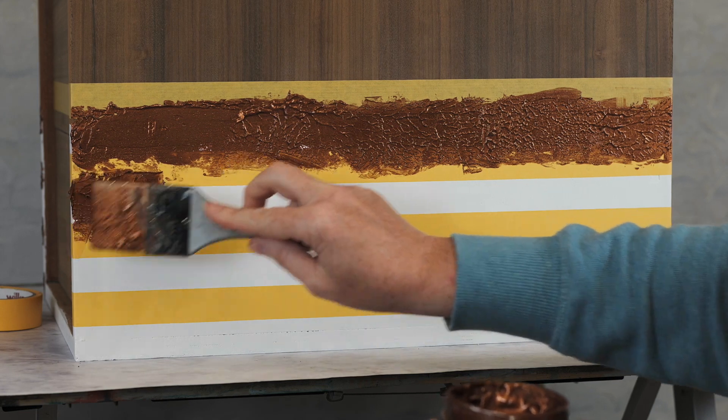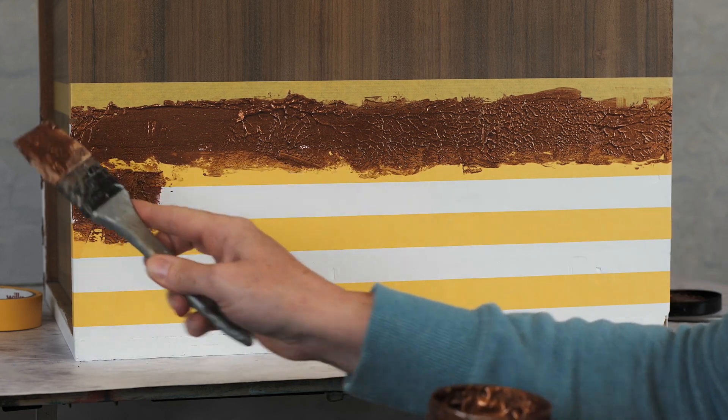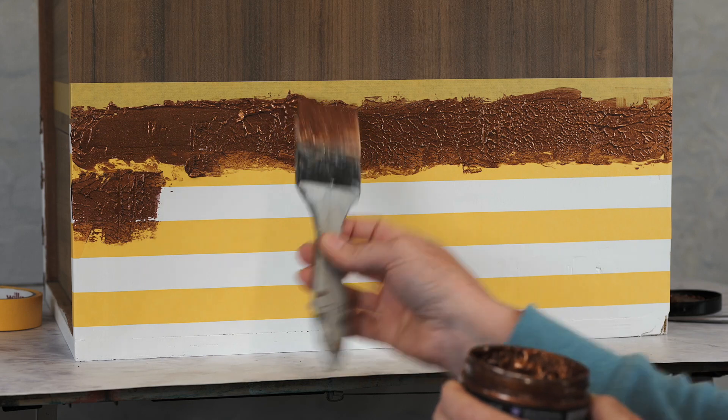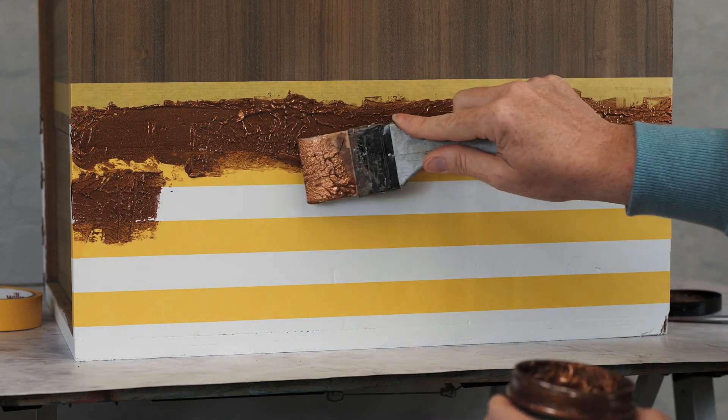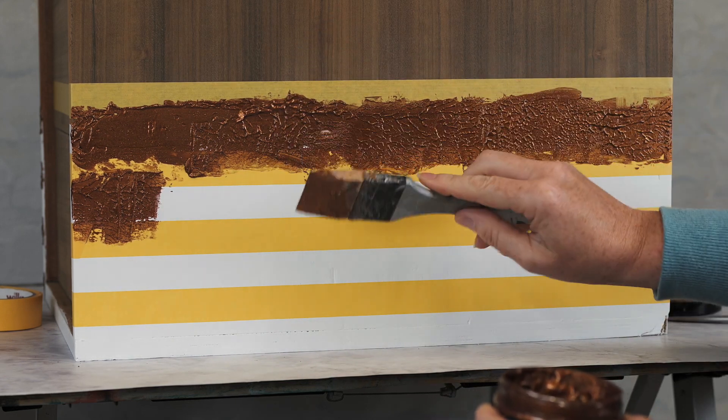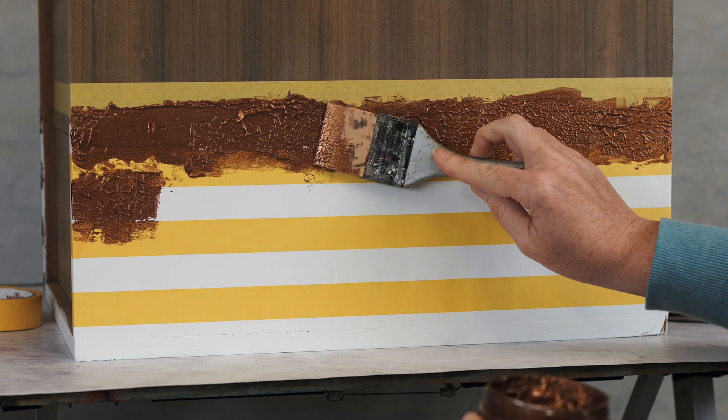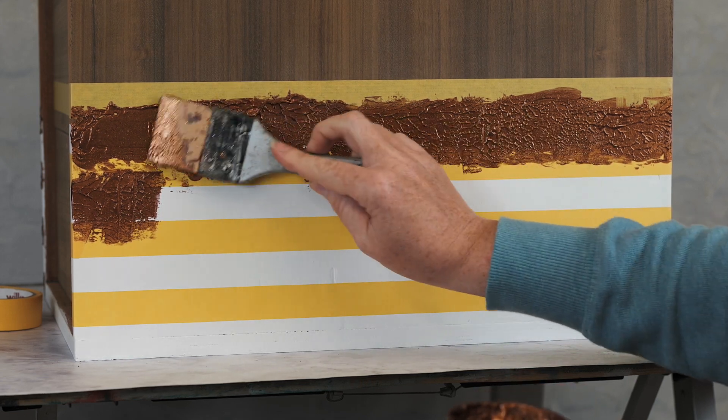And I'm adding it quite thick because I really don't want to see any of the white. So there's a little bit of white there. I'm just going to add a little bit more product and add our texture through.